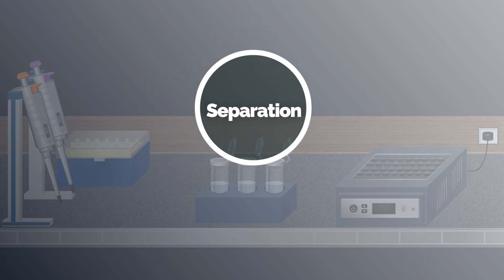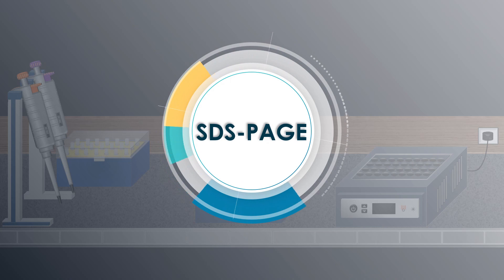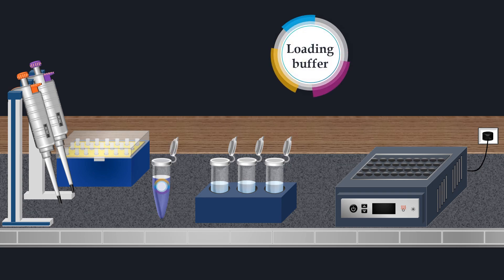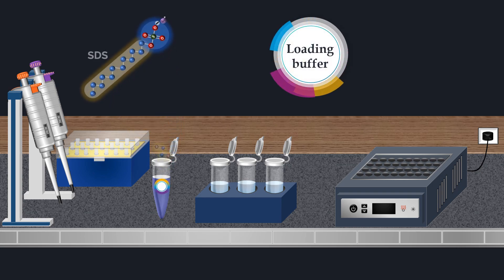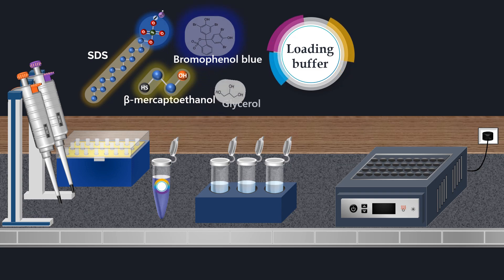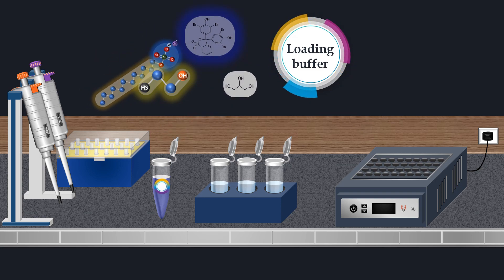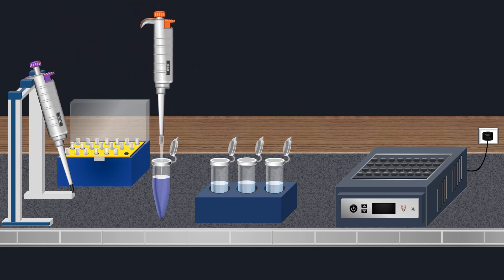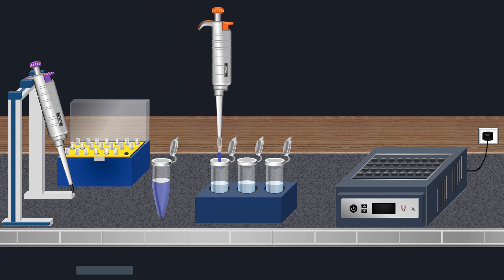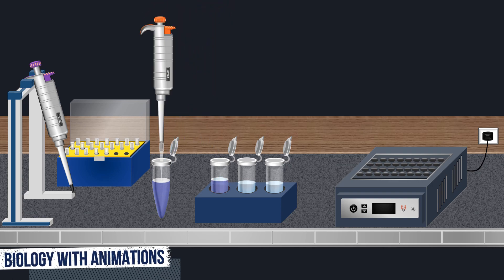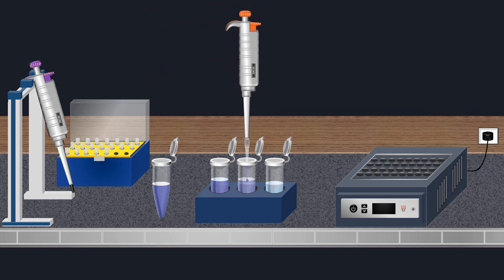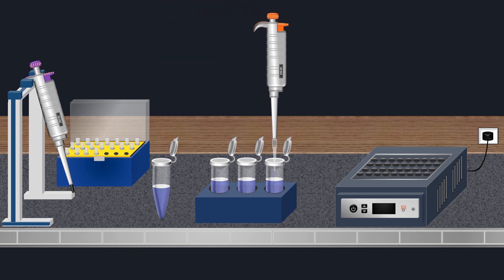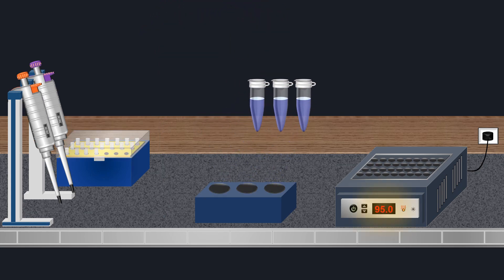To separate the macromolecules in a sample, the SDS-PAGE technique can be used. The first step in the SDS-PAGE procedure is sample preparation. A loading buffer containing SDS, beta-mercaptoethanol, bromophenol blue, and glycerol is added to the protein samples. The loading buffer is used to give all proteins present a uniform negative charge, since proteins can be positively, negatively, or neutrally charged. Once the loading buffer is added, the samples are then heated to 95 degrees Celsius.